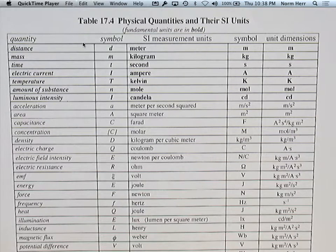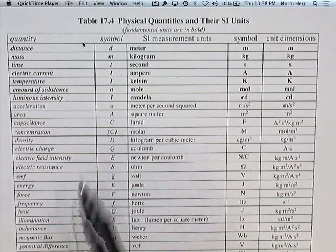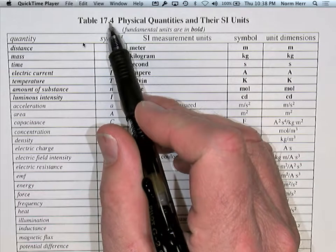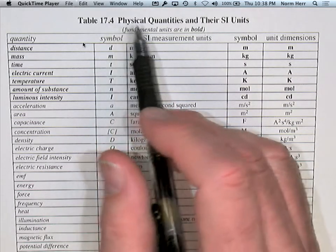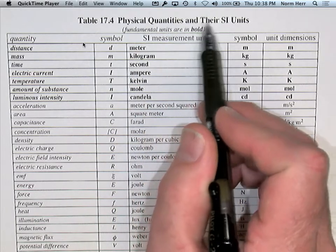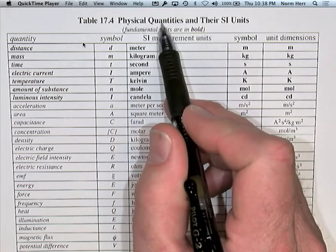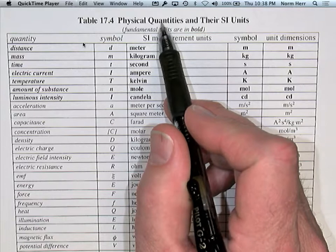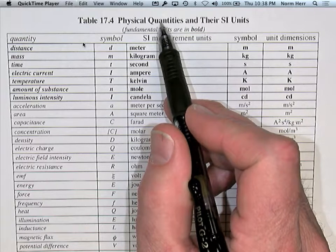Dimensional analysis is a very powerful tool for problem solving in science. Table 17.4 in the Sourcebook for Teaching Science describes the physical quantities and their SI units. These are the physical quantities that are most frequently used in biology, chemistry, geoscience, and physics.